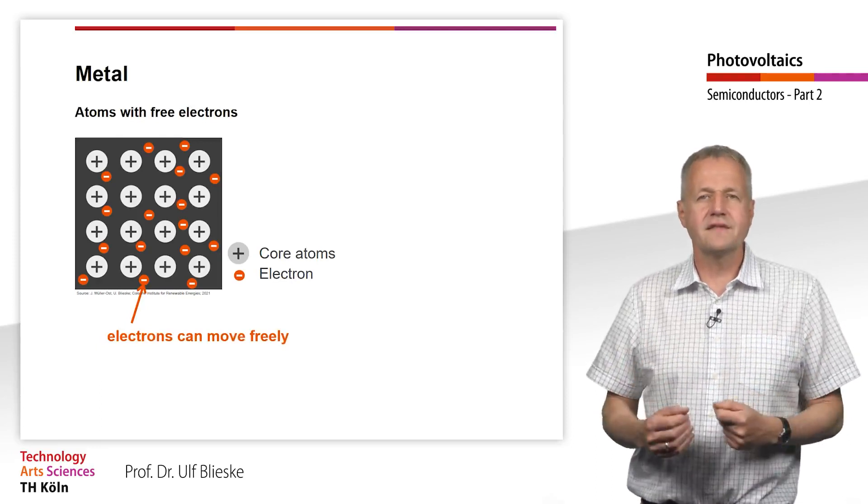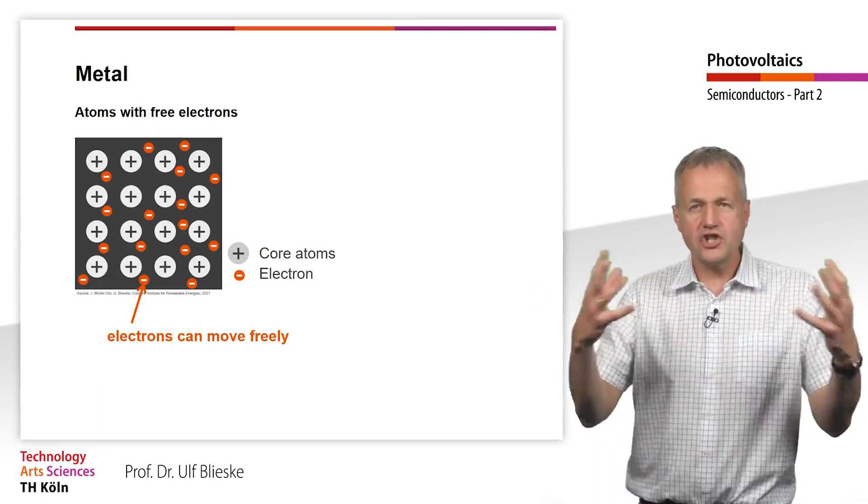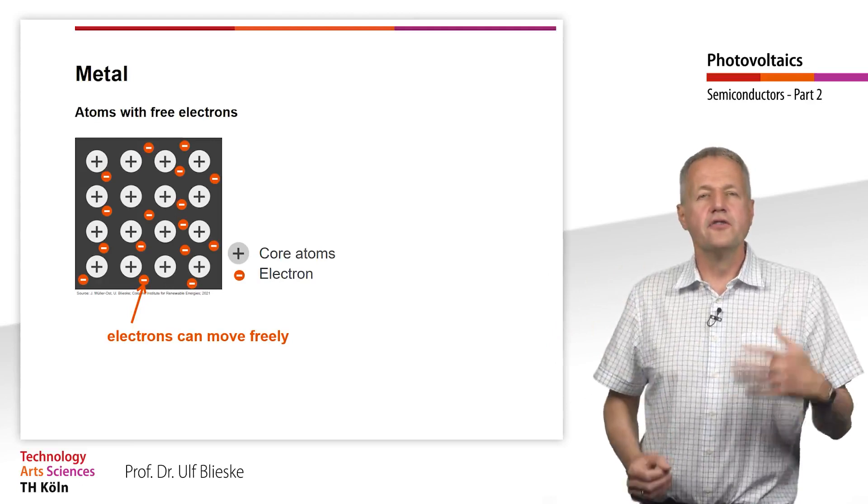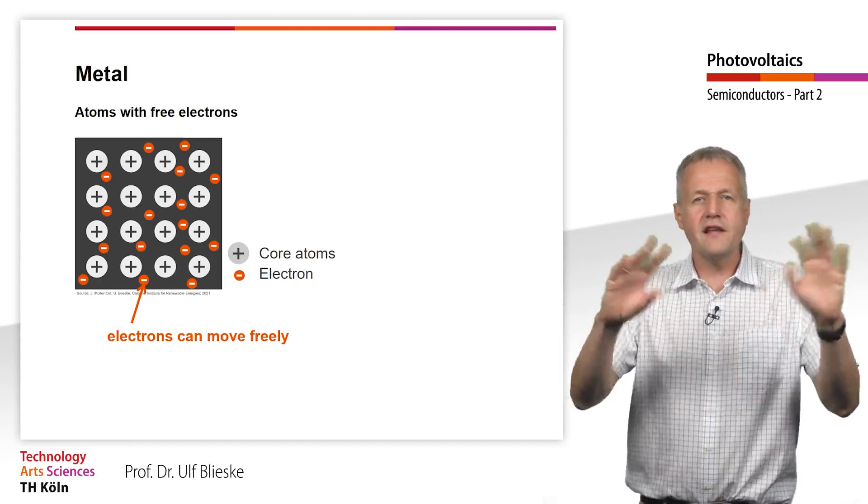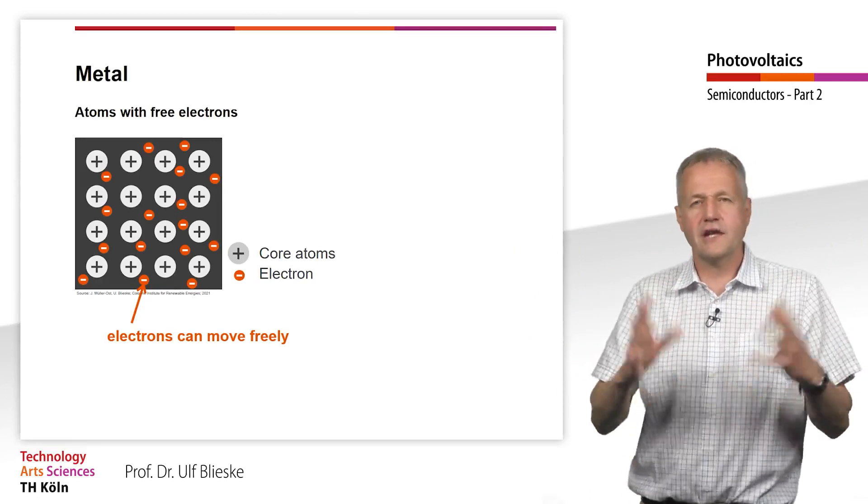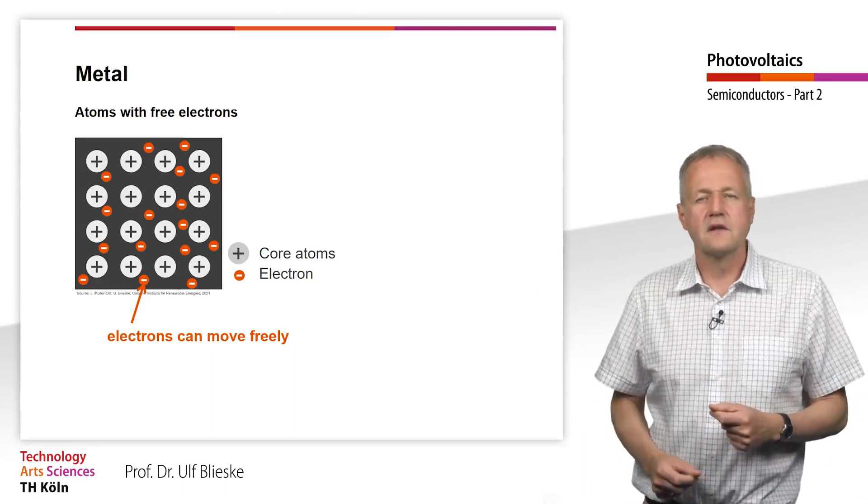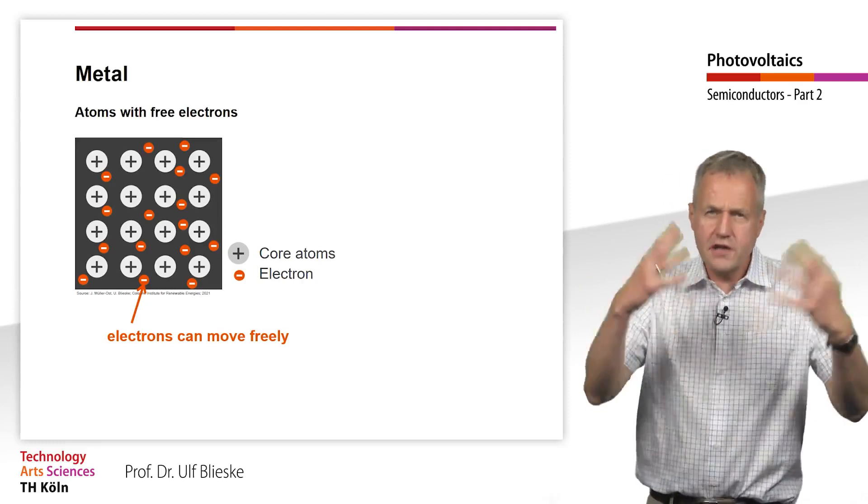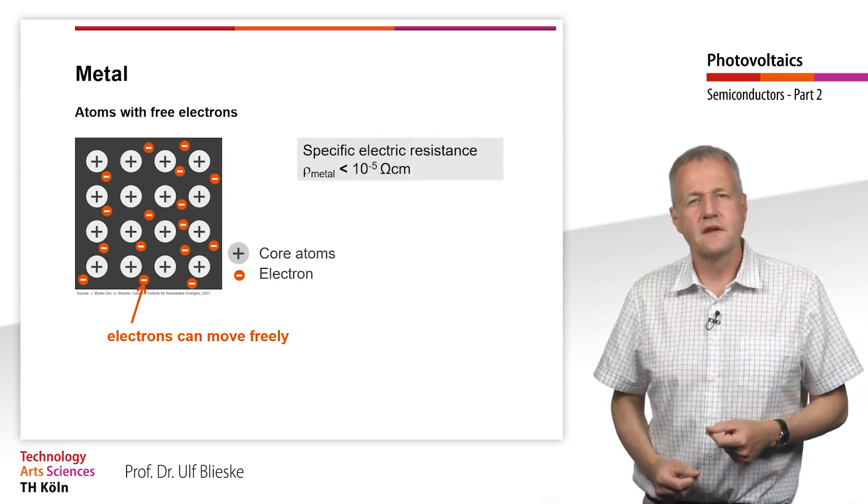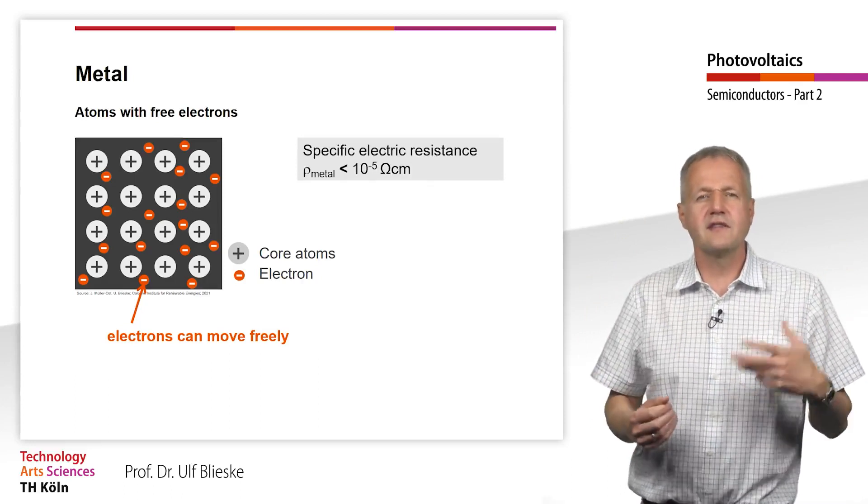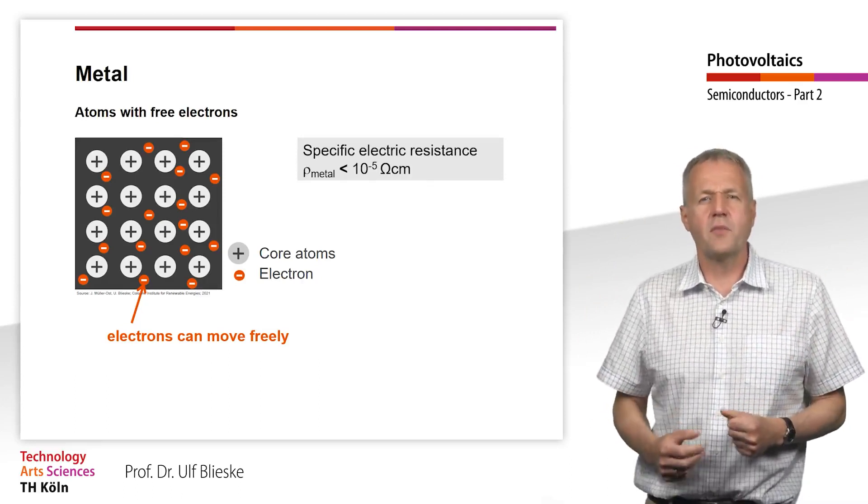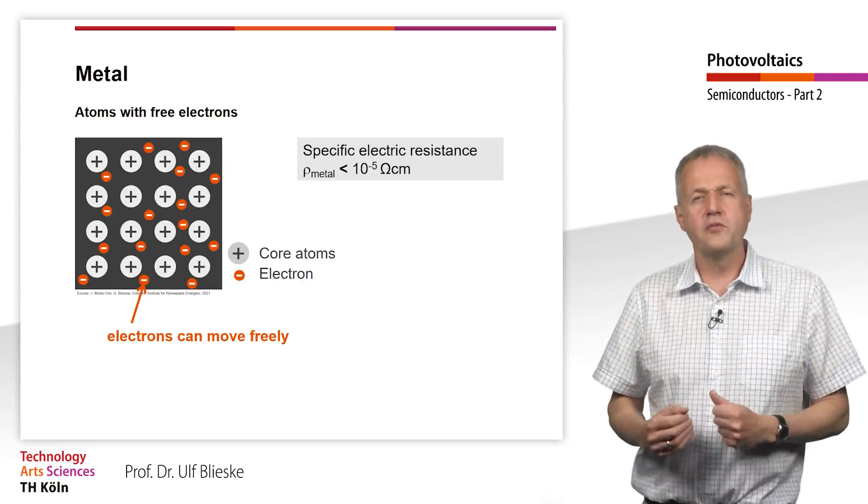In contrast, the electrons of the outer shell are not bound to the atomic nucleus. They can move freely and are also called electron gas. This results in a very good conductivity. The specific electrical resistance of metal is less than 10 to the power of minus 5 ohm centimeter.